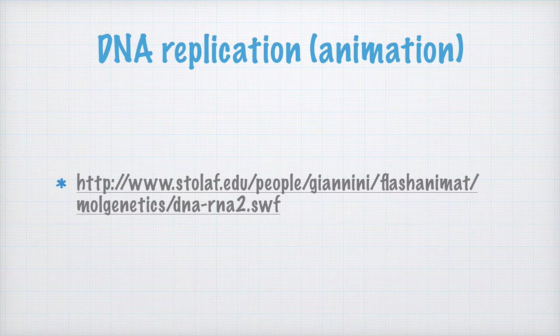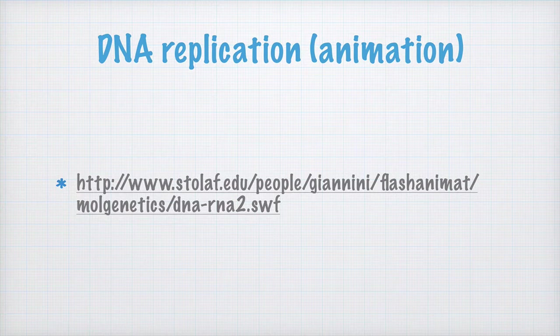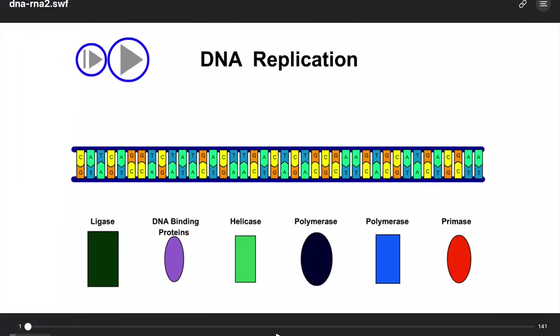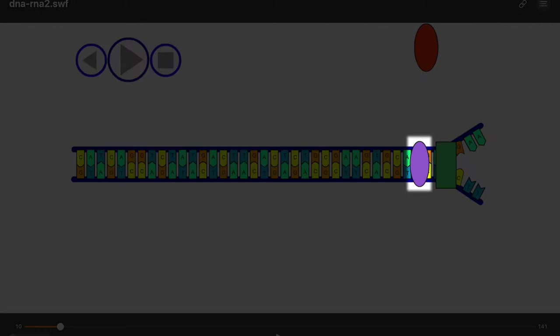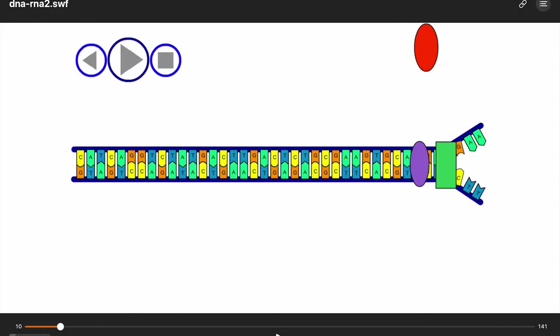The animation is from Professor Giannini of St. Olaf College in Minnesota, USA. I do hope this is considered fair use. Anyway, here we have a small piece of DNA that's about to be copied. What happens first here is that a protein called a helicase, that's the green rectangle here, opens up the DNA molecule, somewhat like a zipper. The violet oval here represents stabilizing proteins.